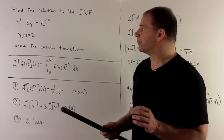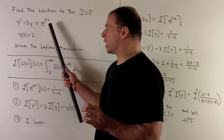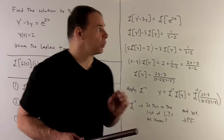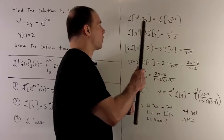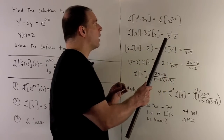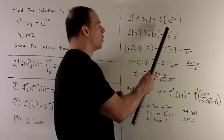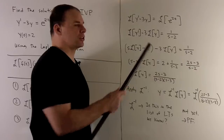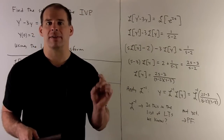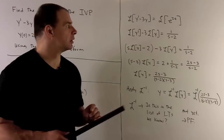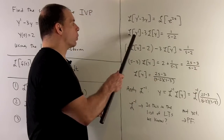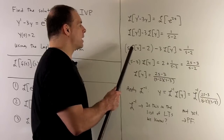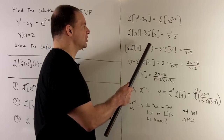If two things are equal to each other, we take the Laplace transform of both sides and they stay equal. So we apply the Laplace transform to both sides of our equation. On the right-hand side, we get 1 over s minus 2 by property 1. On the left-hand side, we use linearity to pull apart the sum and factor out the minus 3, then apply the derivative rule to rewrite the Laplace transform of y prime as s times the Laplace transform of y minus y of 0, which is 2.